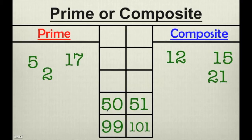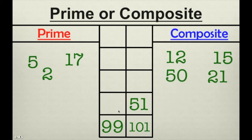How about 50? 50 is a composite number. It has more than just 2 factors. It can be divided by 1, 50, 2, 25, 5, and 10. Therefore, it's definitely composite.